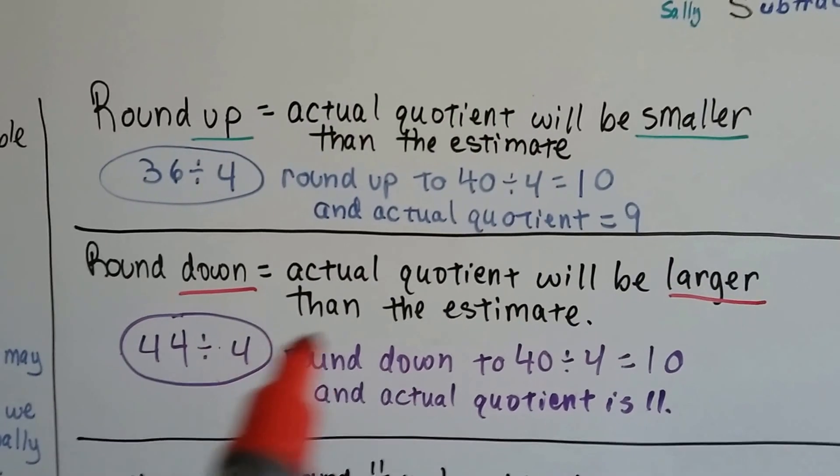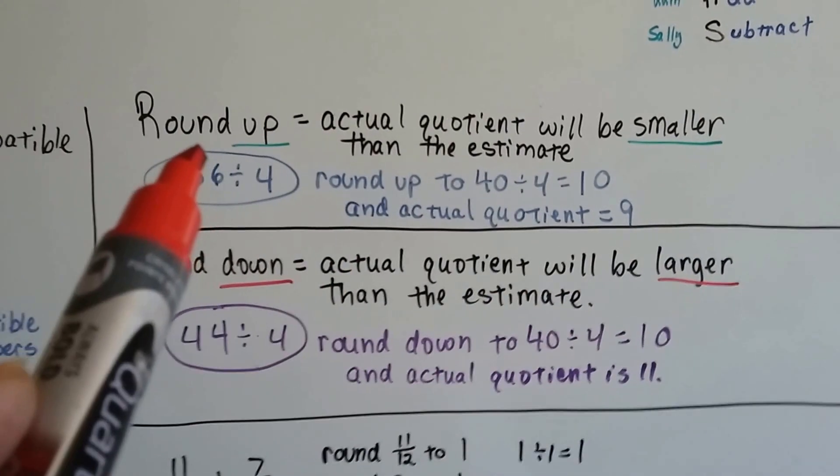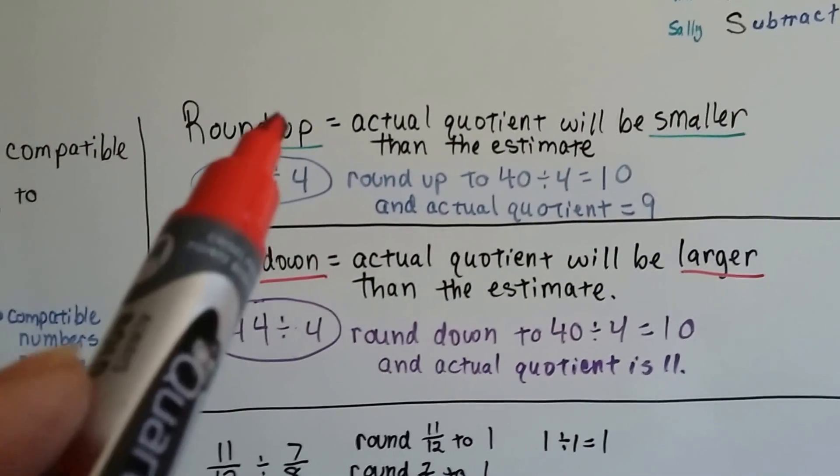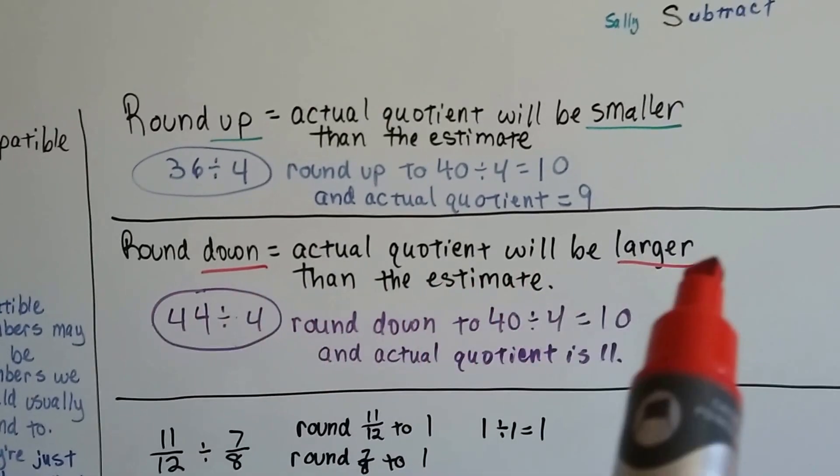If you round down, the real answer is larger. If you round up, the real answer is smaller. It's like they criss-cross. Up makes smaller, down makes bigger.